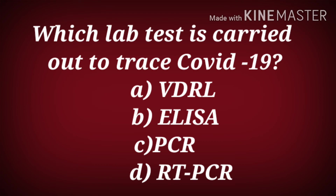Which lab test is carried out to trace COVID-19? Is it VDRL (Venereal Disease Research Laboratory), ELISA (Enzyme-Linked Immunosorbent Assay), PCR, or RT-PCR (Reverse Transcriptase Polymerase Chain Reaction)? The correct answer is RT-PCR.